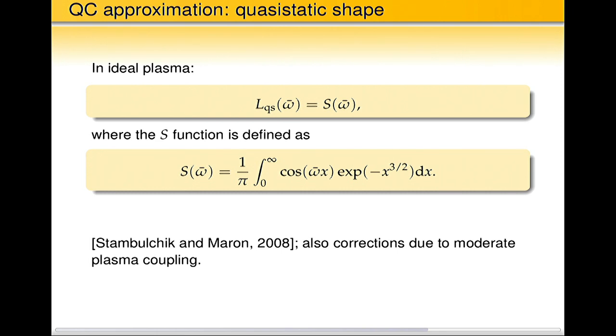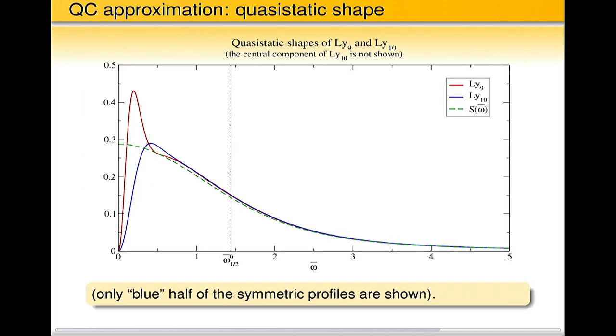Okay. So let's see how this function looks like. So I plot that with a green dashed line, and I, as is custom in line shape literature, if the line shape is symmetric, let's just plot only one half of it, the rest will be symmetric. So that's this universal function, and I plot the same true calculations of two lines, two high lines, line 9 and line 10. And you see that except of the central region, the rest is just extremely nice, extremely nice fit. It's not fit, yeah, it's an analytical derivation.